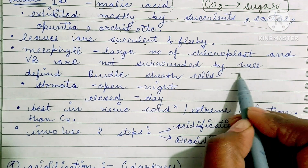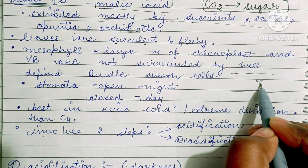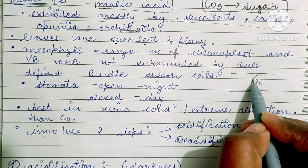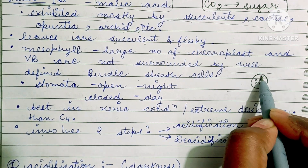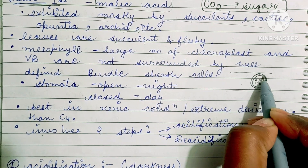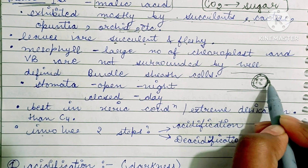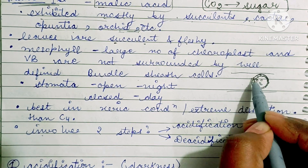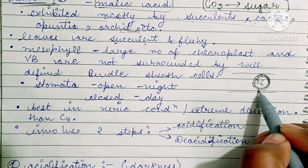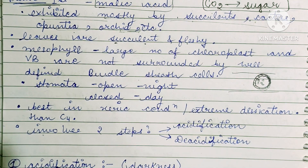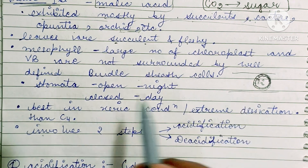As we know, vascular bundles are present and are surrounded by sheets which we call bundle sheaths. In CAM cycle plants, these bundle sheaths are not very well defined.